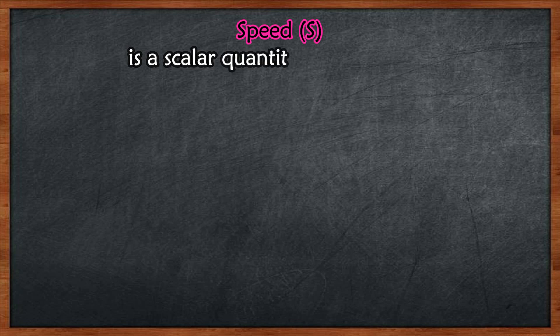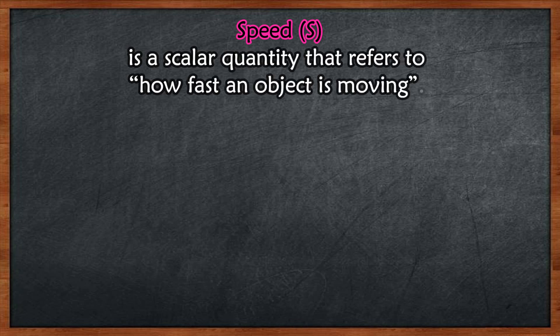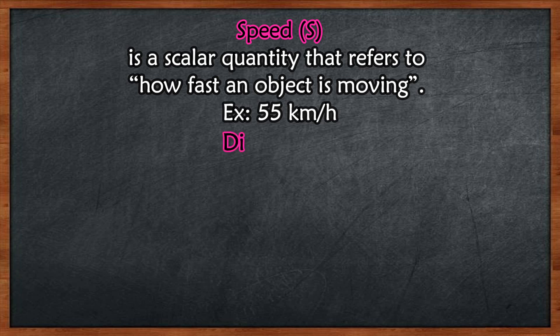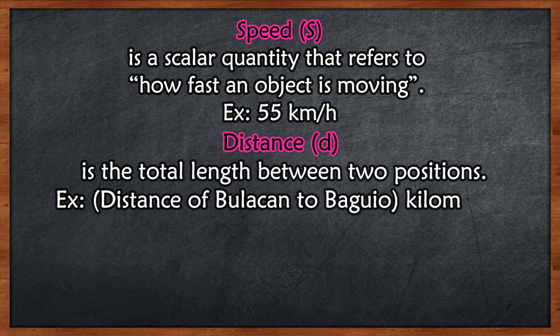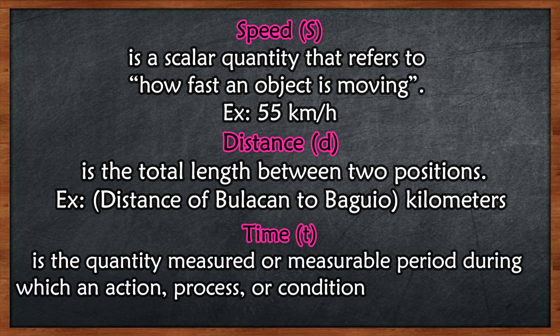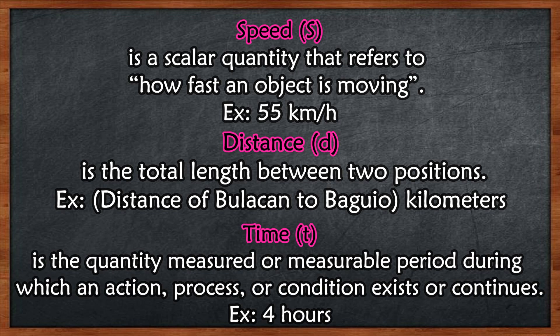Speed is a scalar quantity that refers to how fast an object is moving — gaano kabilis. Example: 55 kilometers per hour. Speed can be thought of as the rate by which an object covers distance. Distance is the total length between two positions. Example: the distance of Bulacan to Baguio in kilometers. Time is the quantity measured or measurable period during which an action, process, or condition exists or continues. Example: four hours.